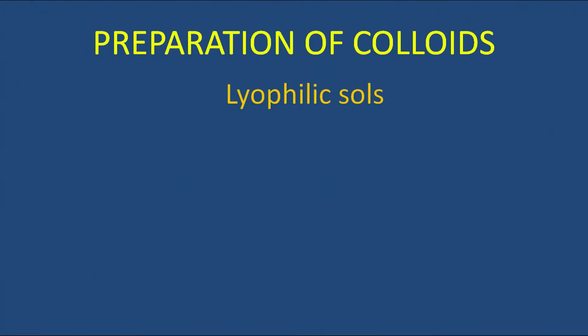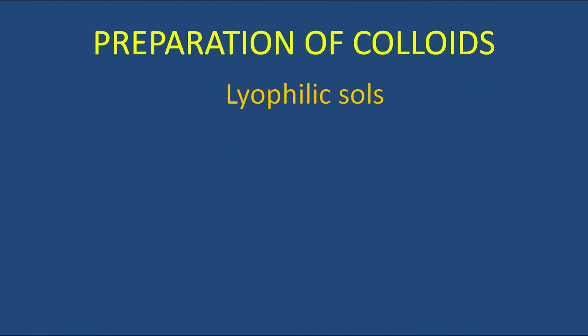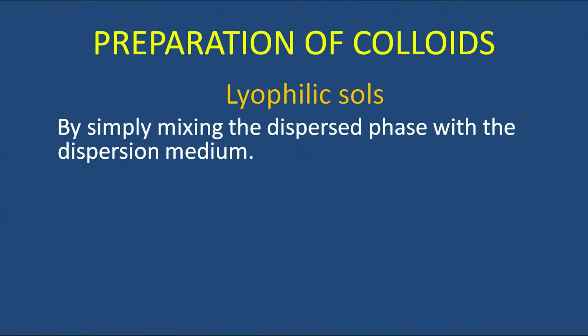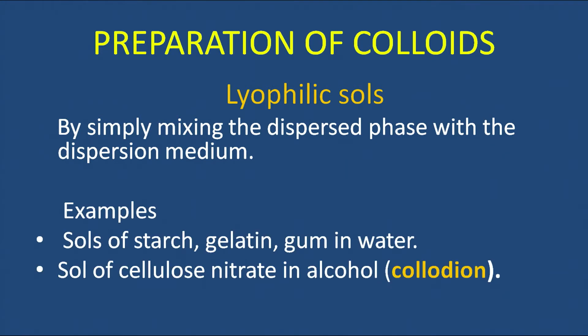Let us start with the preparation of colloids. As we learned in the last program, colloids can be classified into two categories: lyophilic colloids and lyophobic colloids, based on the interaction between the dispersion medium and dispersed phase. Lyophilic sols have great affinity between the two phases, so they can be prepared simply by mixing the dispersed phase with the dispersion medium. For example, we can prepare sols of starch, gelatin, and gum in water by stirring or heating.